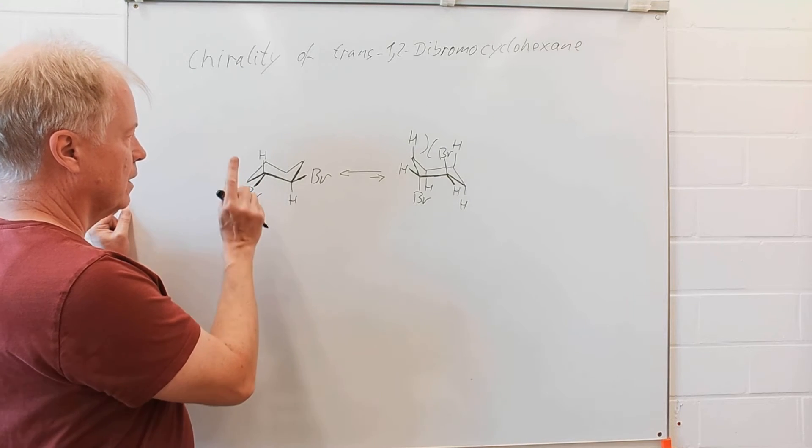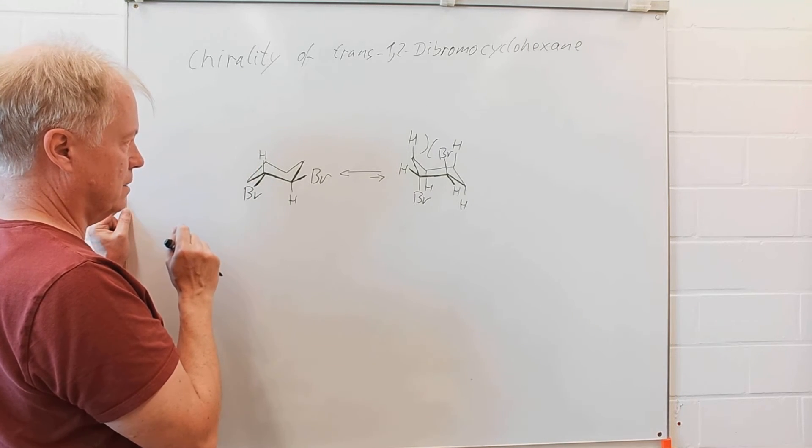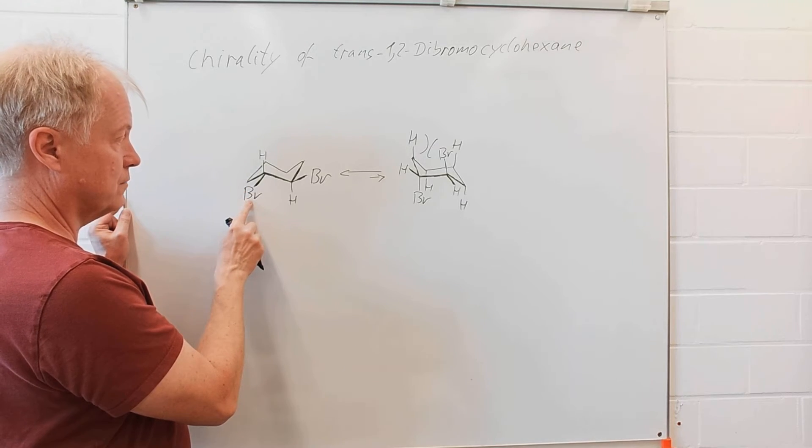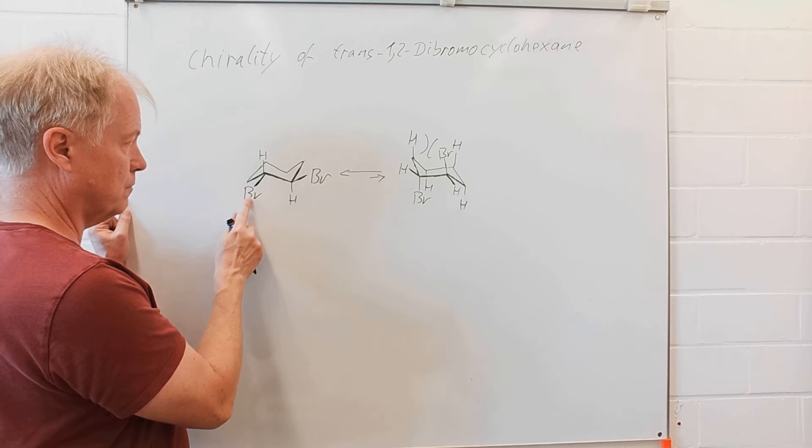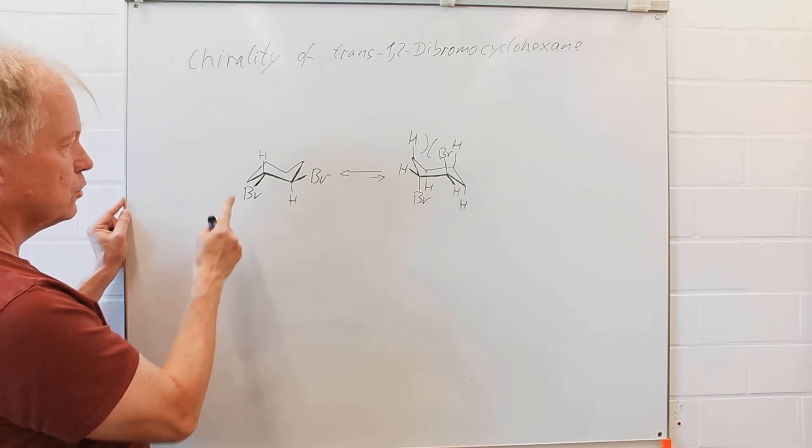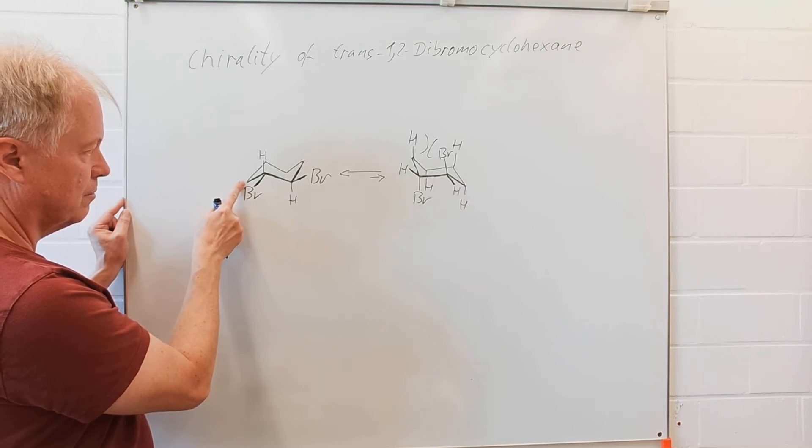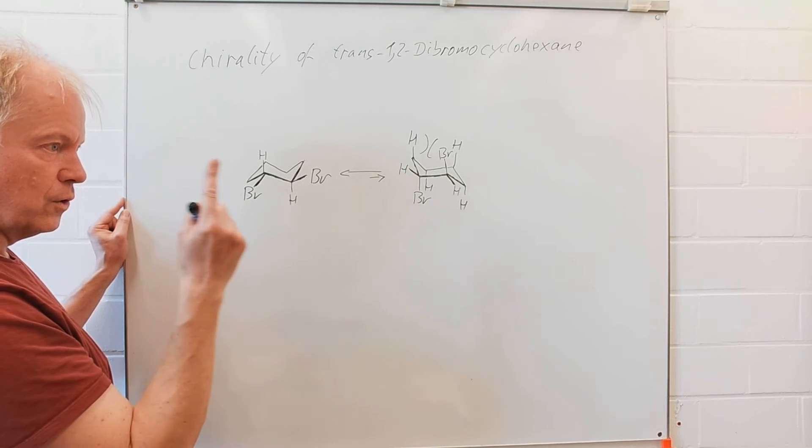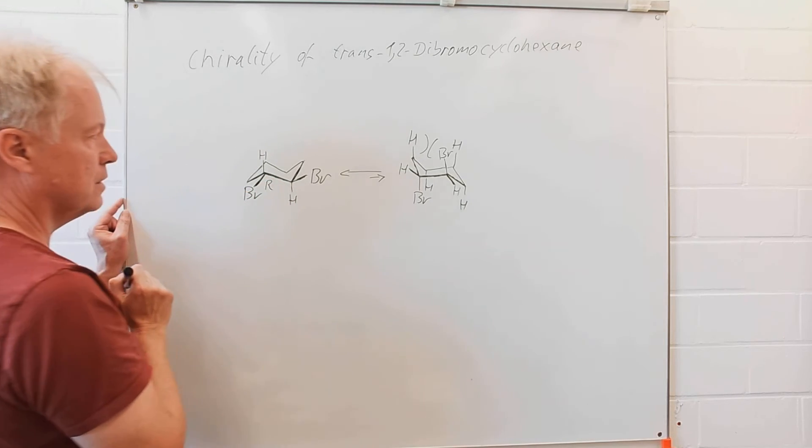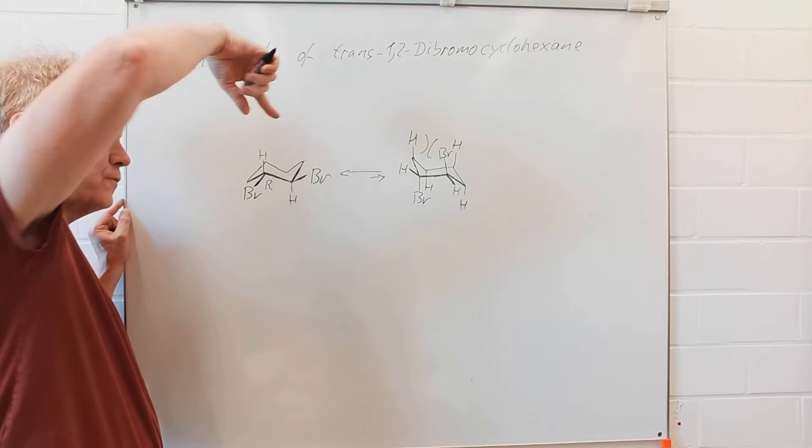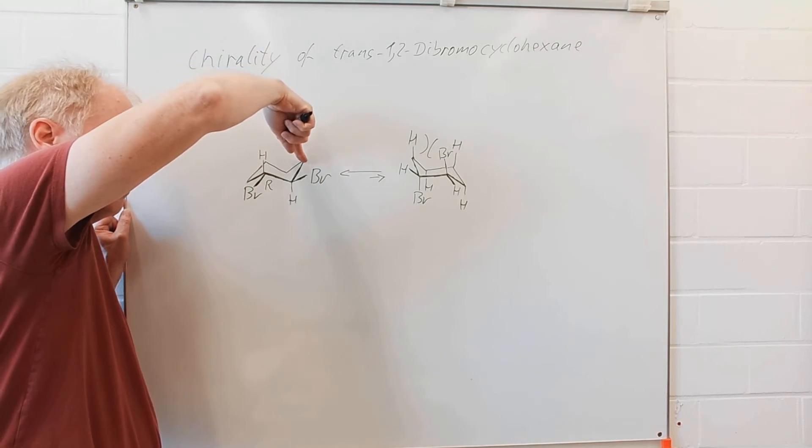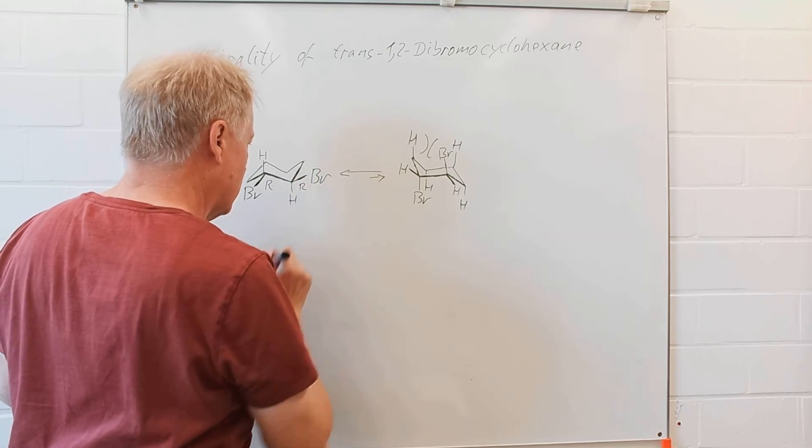Hydrogen has the lowest priority, bromine has the highest priority. From the bromine to that carbon where the other bromine is sitting, to that methylene group, it's clockwise, therefore it's R. Here, from the bromine to that carbon to the methylene group, it's also R.